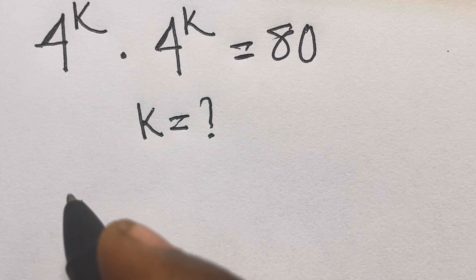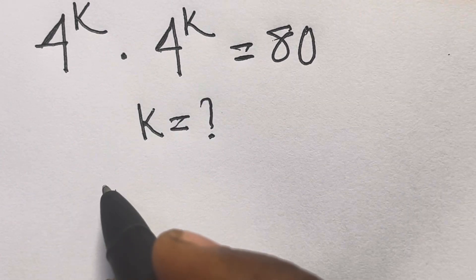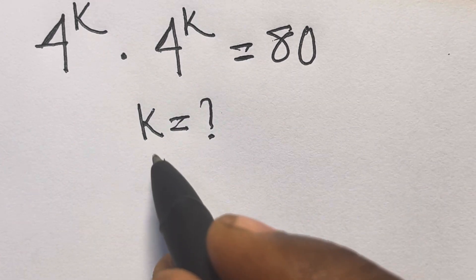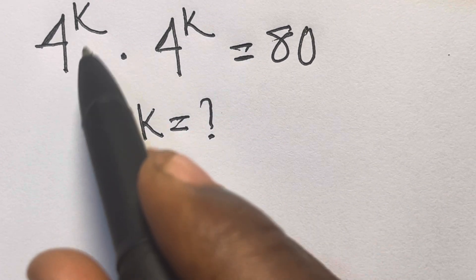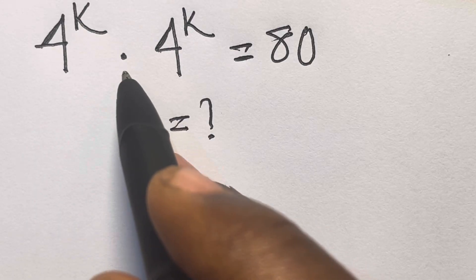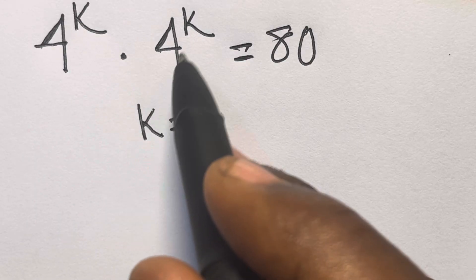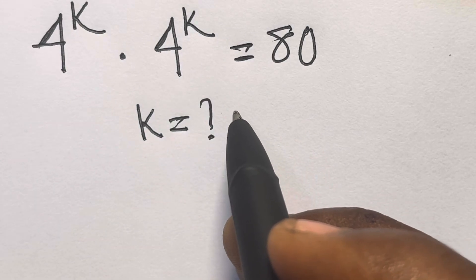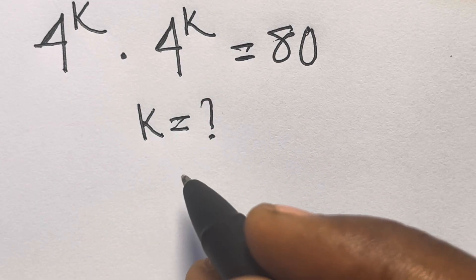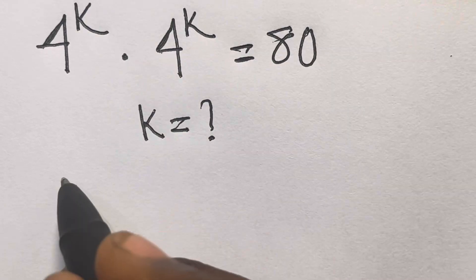Hi, welcome to mathematics. In this video, we want to solve for k in 4 × 3^k times 4 × 3^k equals 80. So let's see a solution.